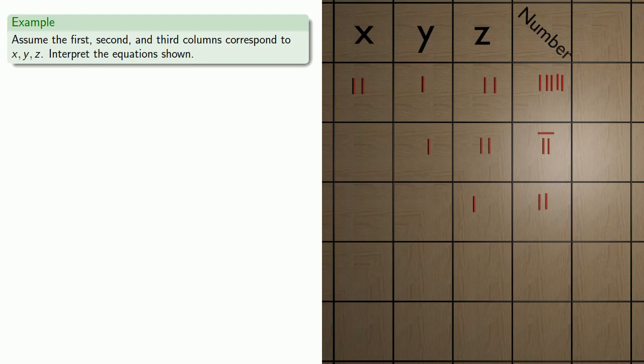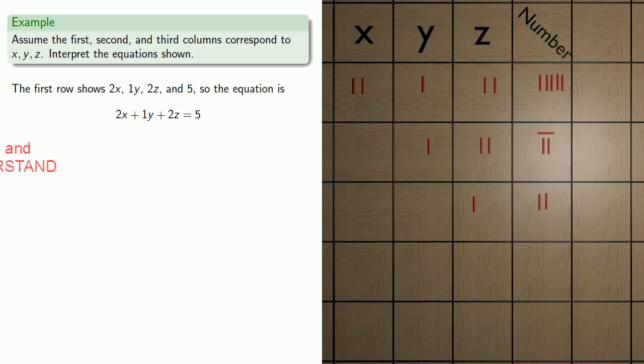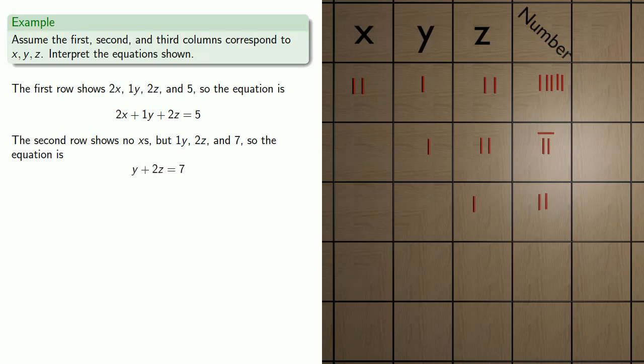Or let's say I have a counting board representation of a system of equations. So assuming that our first, second, and third columns correspond to x, y, and z, let's interpret these equations. So our first row shows we have 2 of x, 1 of y, 2 of z, and the number 5. So the equation is 2x plus 1y plus 2z equals 5. The second row shows we have no x's, but we do have a y and two z's and a 7. So our equation is y plus 2z equals 7. And the third row shows a z and a 2, and so the equation is z equals 2.